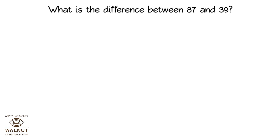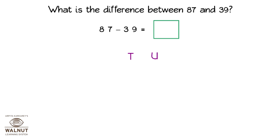What is the difference between 87 and 39? What do we have to do here? We have to do 87 minus 39. So, we write it like this. Then we have to find the answer. How do we do it? First, we write the problem properly in tens and units form.